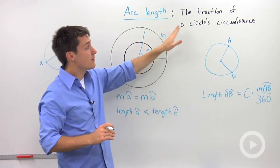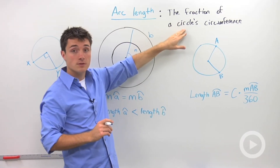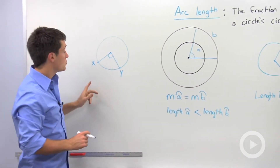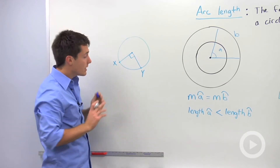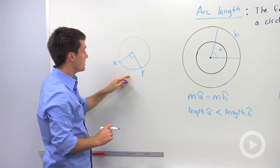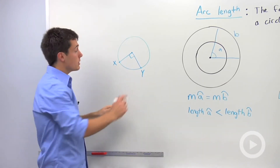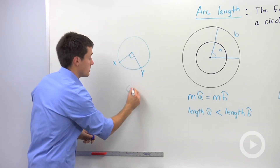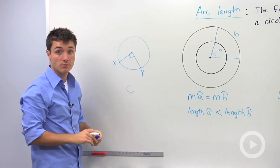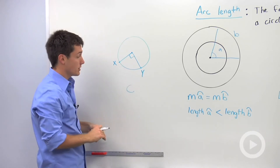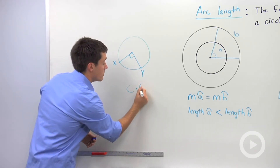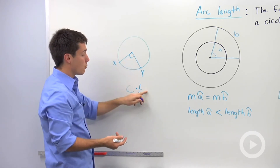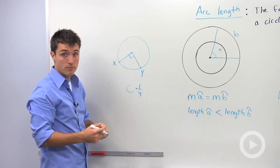Arc length is the fraction of a circle's circumference. So if we looked at a circle where I've drawn a right angle, and asked what is the distance between X and Y — if we know the whole circle has a circumference of C, the fraction here is just going to be one-fourth of that, because 90 degrees is one-fourth of the circle, and a full circle is 360 degrees.